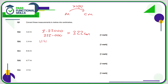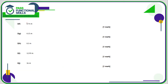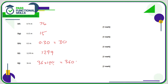If there are two decimal places we can simply remove the decimal point: 114 centimeters, 846 centimeters, 677. 1.9 meters can be written as 1.90, so that's 190 centimeters. 0.74 meters is 74 centimeters. 15 centimeters. 0.3 is the same as 0.30, so that is 30 centimeters. 1299 centimeters. For a whole number, just multiply by 100 — stick two zeros on the end, nice and easy.